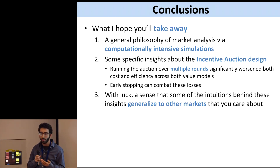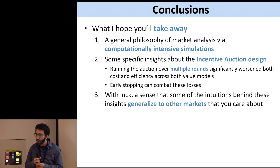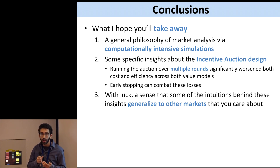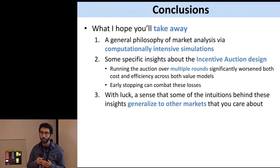In conclusion, computationally-intensive simulations are one way to explore markets with complex constraints like the interference graph. We have specific insights about the incentive auction design: running through multiple stages could have been harmful, and we see this according to both value models. An early stopping amendment might have been able to fix that. With luck, maybe some of these insights can generalize to other markets.